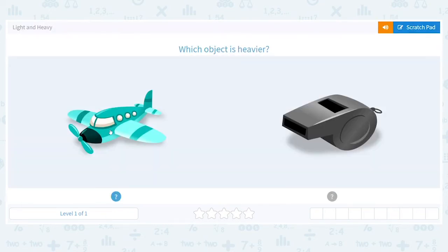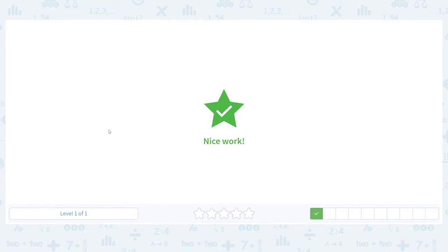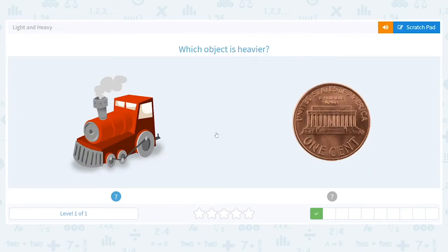Next we have a train engine and we have a penny, one cent. You might say that's not a penny, that's the back of the penny. That is still a penny. And again, we want to know which object is heavier, so let's talk about it.